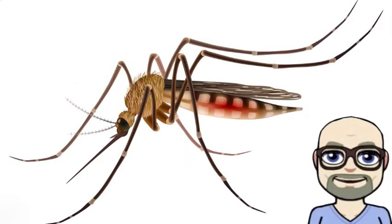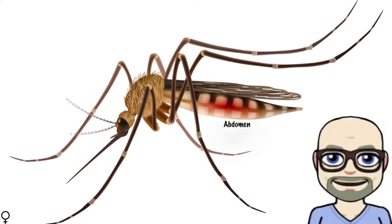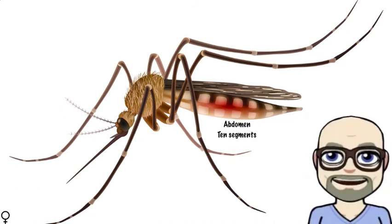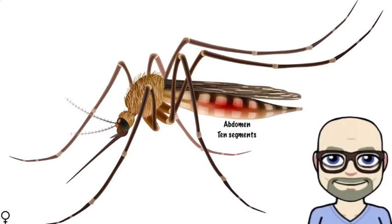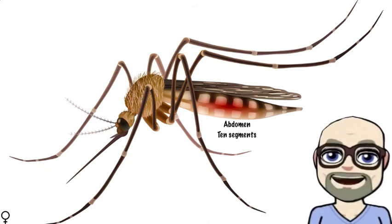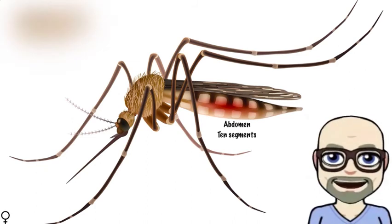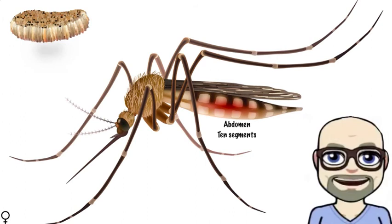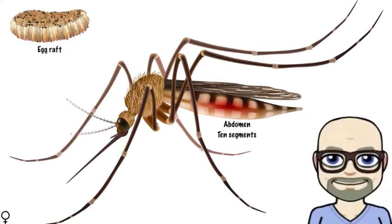The abdomen is divided into ten segments. Each segment, except the first and ninth through tenth segments, contains a set of spiracles. Contained by the ninth segment is the gonophor, or aperture of the common oviduct, through which eggs pass during oviposition.